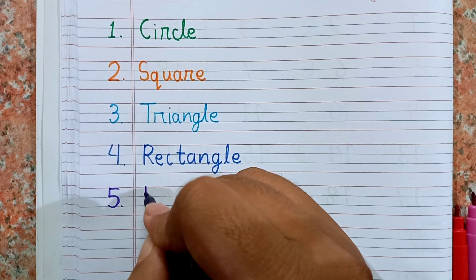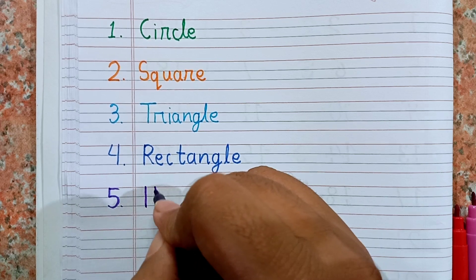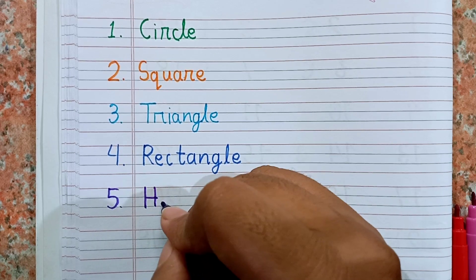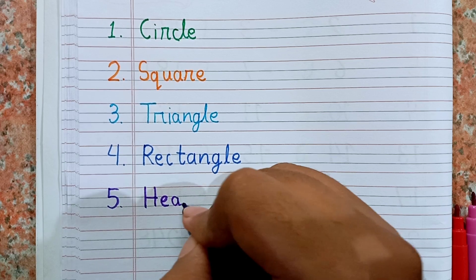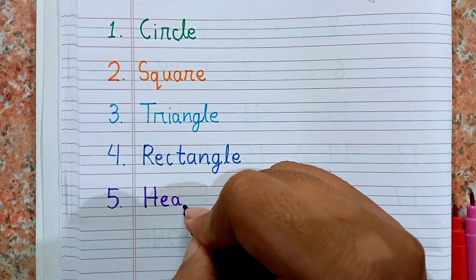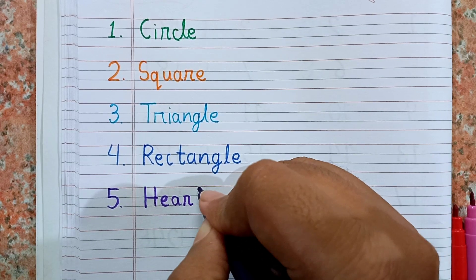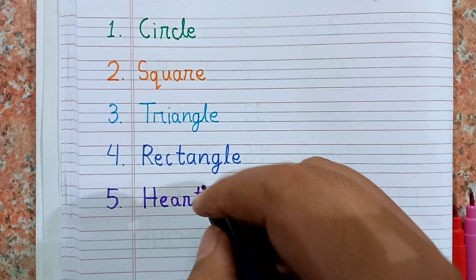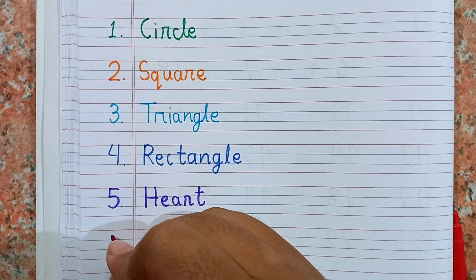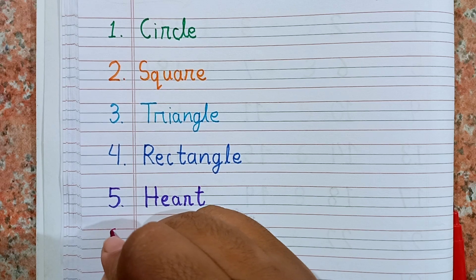After rectangle, number five, I am writing heart shape. The spelling of heart is H-E-A-R-T. Heart. This is heart shape.